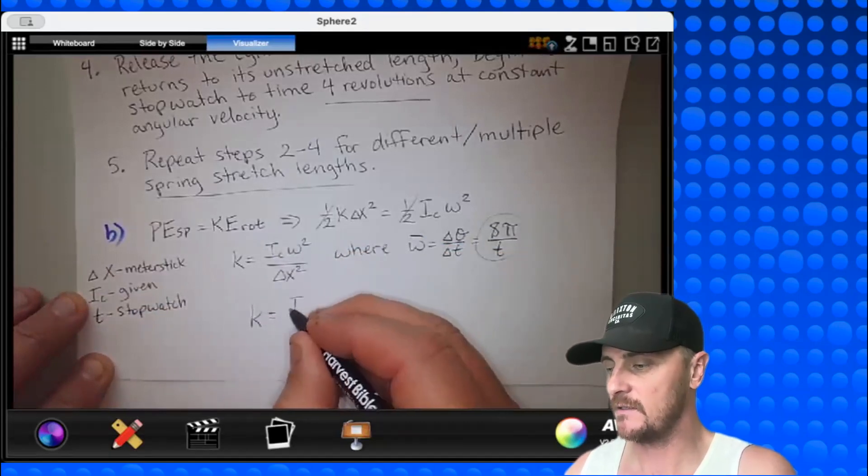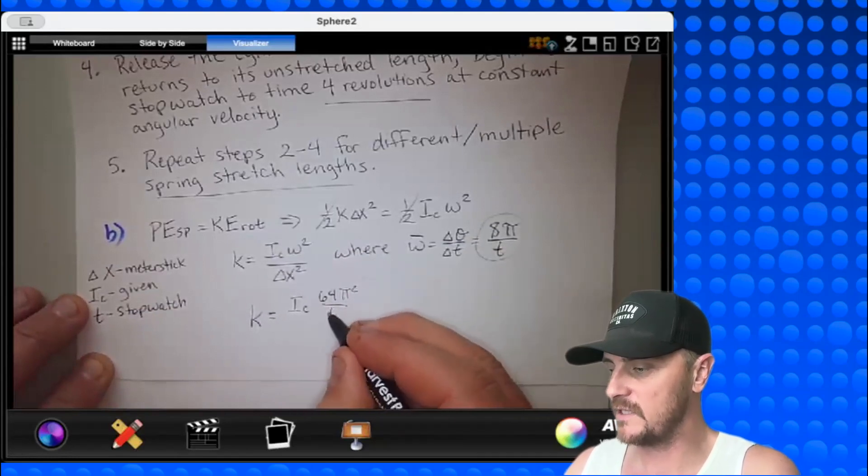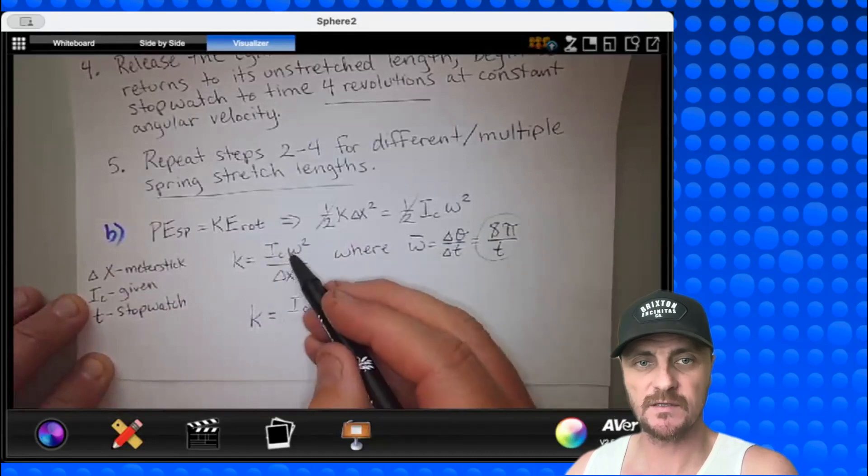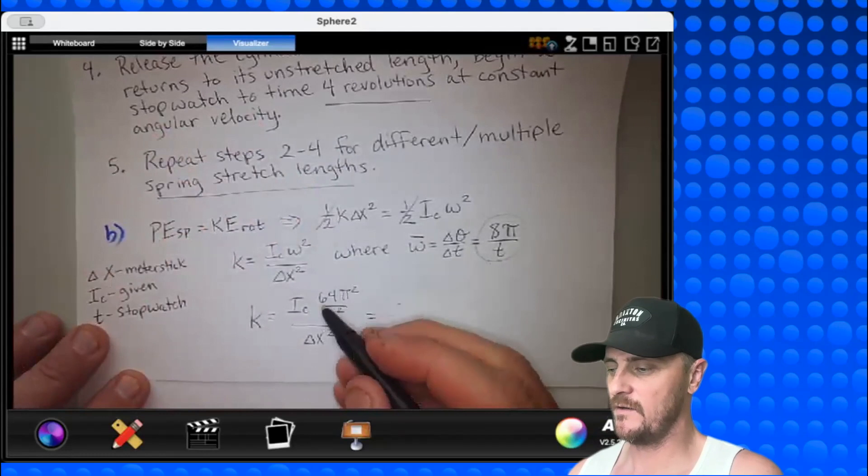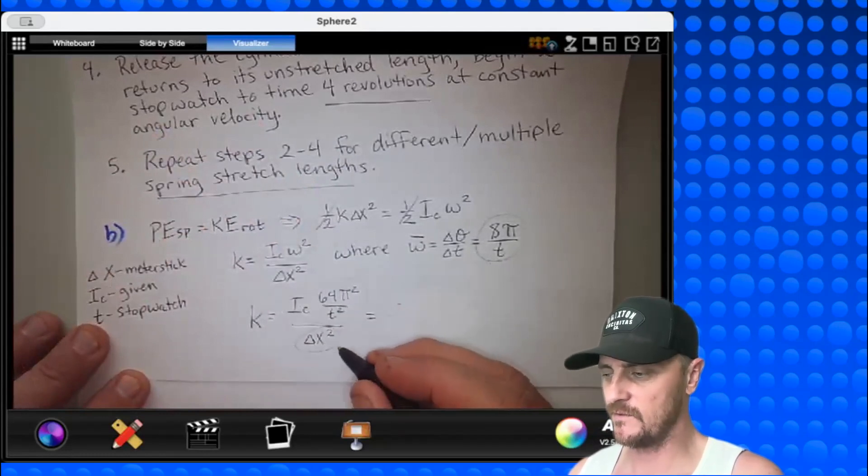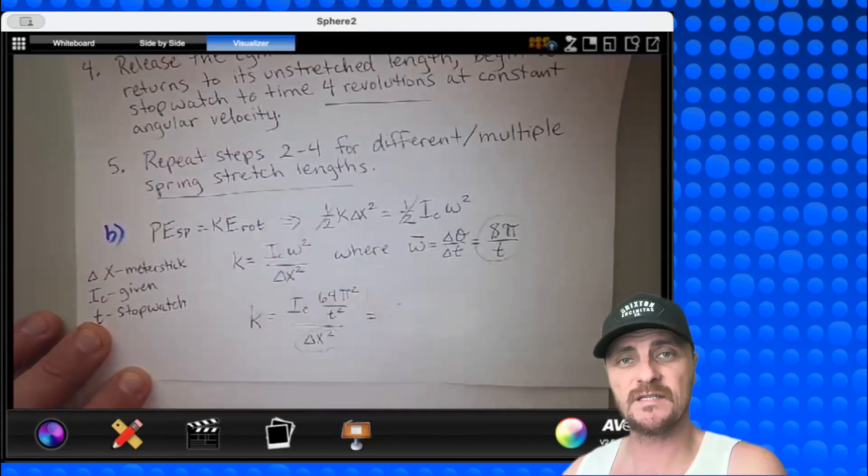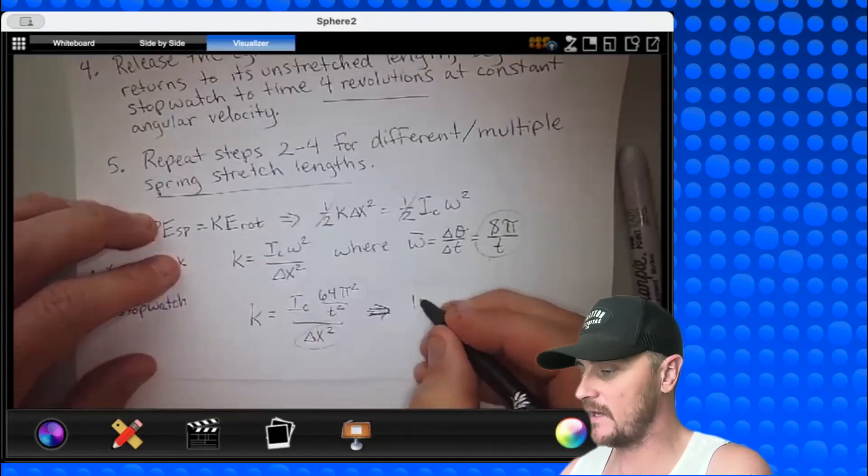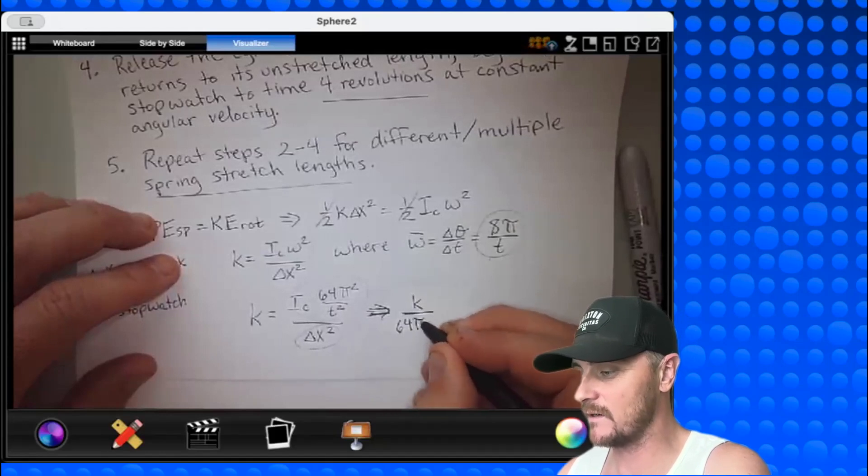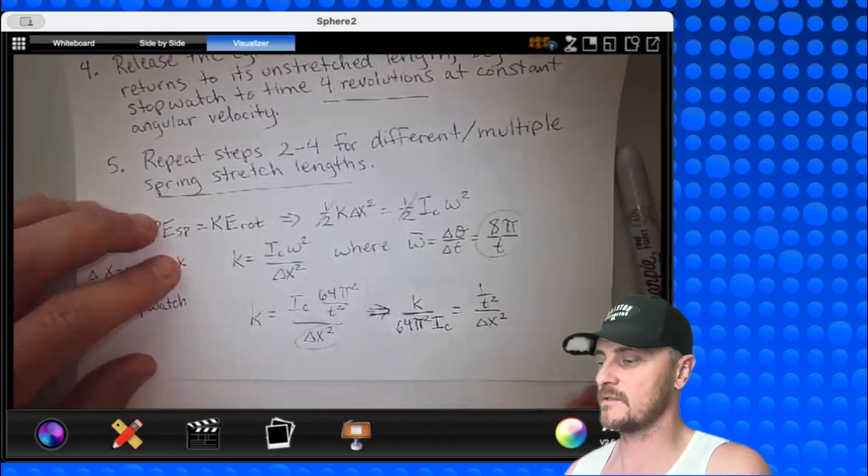And now I can plug this idea in for omega right here. So I'll have K equals IC times 64 pi squared all over t squared. I just squared every term, because omega is being squared, divided by delta x squared. Alright, and you can see I have a rise over a run. And if you said this to AP, they'd have to take it. But this is a really clunky rise. So let's take all the constant information over to the other side. That would be IC 64 and pi squared. I would have K over 64 pi squared times IC equals 1 over t squared over delta x squared.